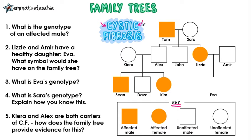This is a cystic fibrosis family tree. And as we learned in the last video, cystic fibrosis is caused by recessive alleles, so we need two recessive alleles to have the disorder.